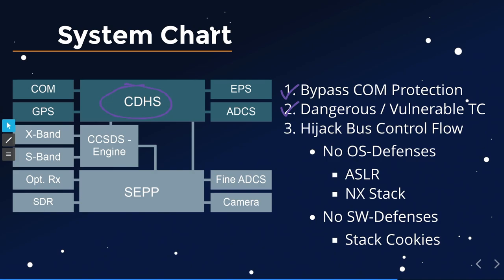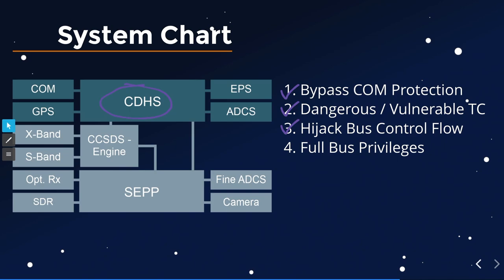In this case, there's no ASLR, no non-executable stack, and no stack cookies. So with a textbook buffer overflow, we can get code execution on the satellite. And we shouldn't be at root privileges already, right? Yes, we are — it's a privilege-free RTOS. There's no concept of privileges, no root or different users, just different threads running. If you have code execution, that's as far as it gets. One buffer overflow is basically enough to seize control of the satellite in a single-packet manner.